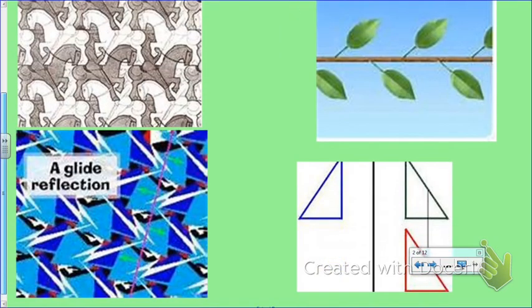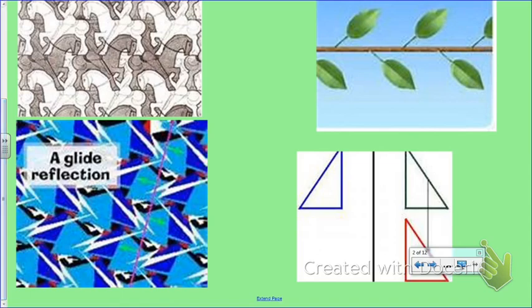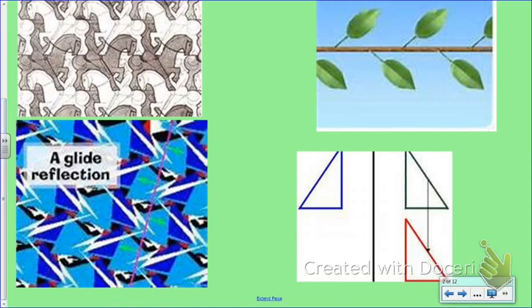The pictures on the bottom are a couple of other examples. The one on the bottom right looks sort of like the one you did on Geometer's Sketchpad where you reflected a triangle and then did a translation. So you went from the blue to the green with the reflection, and then you slid it to the red.